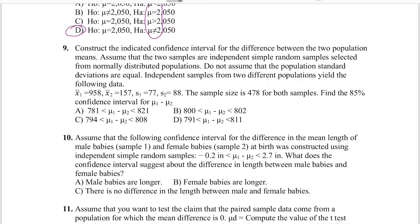Number nine gets more into the actual math. We're setting up a confidence interval for mu using two independent samples, with the given values for these samples. The formula is mu one minus mu two, plus or minus E. Mu one minus mu two comes from subtracting the x-bars from each other, which gives us a value of 801. So it's 801 plus or minus E.